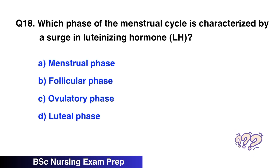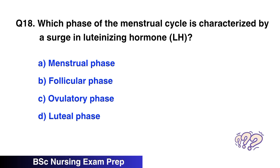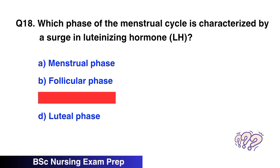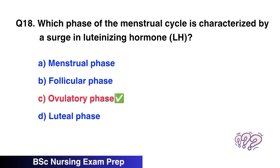Question 18. Which phase of the menstrual cycle is characterized by a surge in luteinizing hormone (LH)? The correct option is C, ovulatory phase.